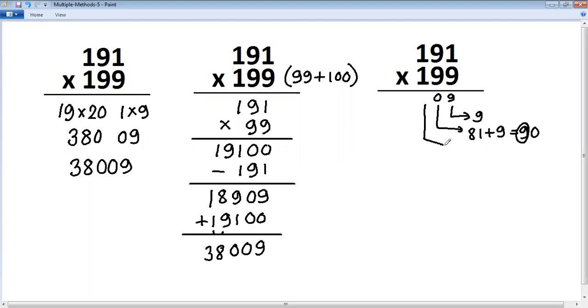Next step, 1 into 9 is 9, 9 into 1 is 9, 9 into 9 is 81, plus 1 into 9 is 9, which gives 9 plus 9 plus 81 plus 9 equals 100. So out of that will take 0, carry 10.